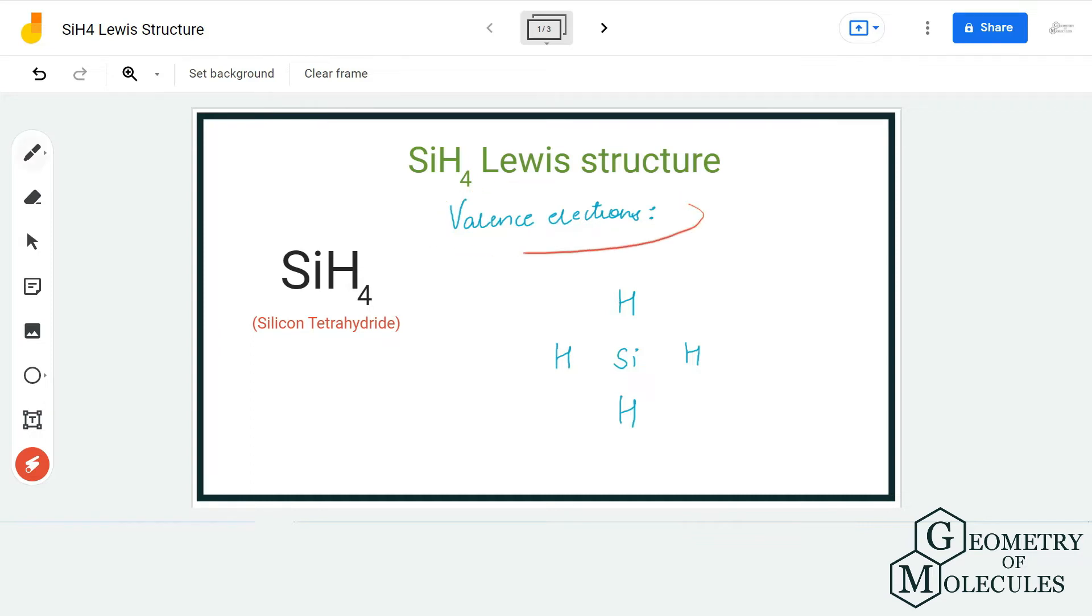Here we have one silicon atom which has four valence electrons, and each hydrogen atom has one valence electron. So in total we have eight valence electrons for this molecule.